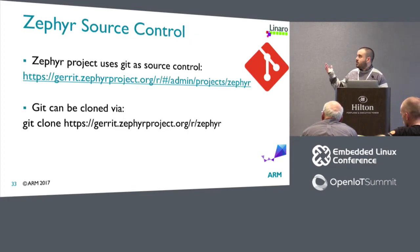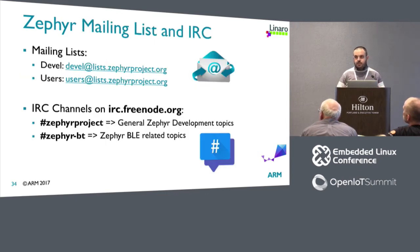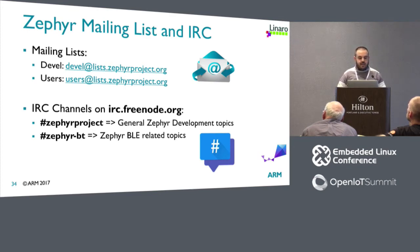The Gerrit repository is the first link — you clone it via Git. You can find a lot of information on the Zephyr project website, and if you want more details, there are two very useful mailing lists to subscribe to and become part of the community: the development mailing list, used for problems encountered during development, and the users mailing list, mostly used when you're trying to use the kernel to make an application. There is also an IRC channel for the project and one for BLE-related topics.